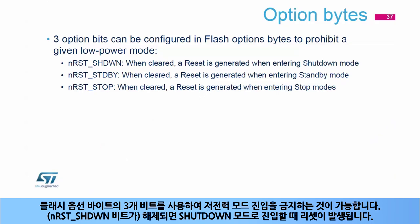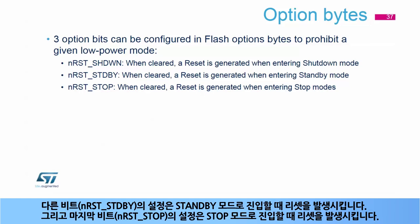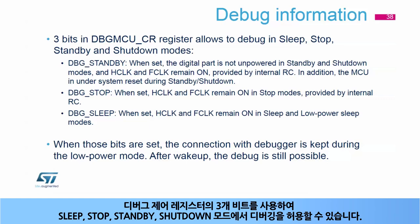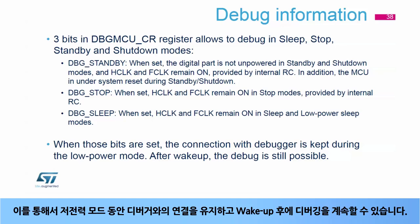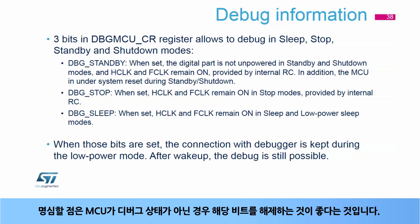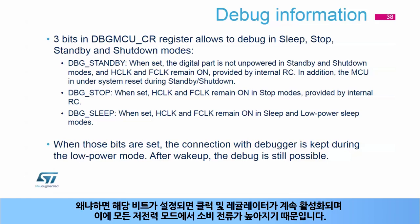Three bits are available in the flash option bytes to prohibit a given low-power mode. When cleared, an option bit configures reset generation when entering shutdown mode; another bit configures reset generation when entering standby mode; and the last bit configures reset generation when entering stop modes. Three bits are also available in the debug control center to allow debugging in sleep, stop, standby, and shutdown modes. When the related bit is set, the regulator is kept on in standby and shutdown modes, and the HCLK and FCLK clocks remain on to keep the debugger alive. This maintains the debugger connection during low-power modes and continues debugging after wake-up. Remember to clear these bits when the MCU is not under debug, because consumption is higher in all low-power modes when these bits are set, as they force clocks and regulators to remain enabled.